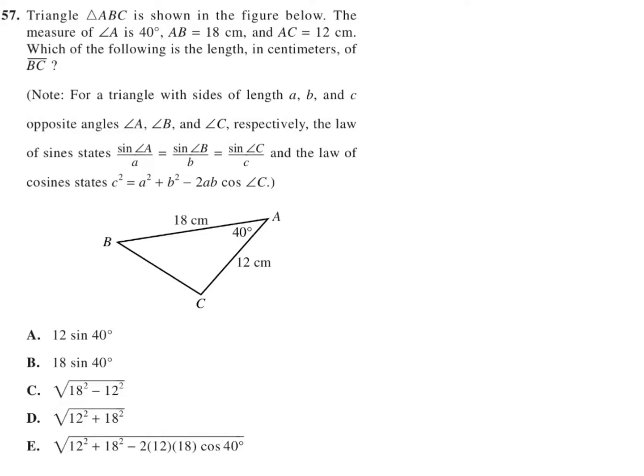Note: for a triangle with sides of length a, b, and c opposite angles ∠A, ∠B, and ∠C respectively, the law of sines states this, and the law of cosines states this.